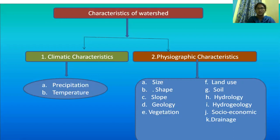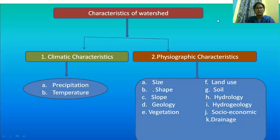In this section, we are going to discuss Physiographic Characteristics. The first one is Size — how it affects the characteristics of a watershed. The size of a watershed can be big or small. Bigger streams have larger watersheds of about millions of square miles. Watersheds are characterized as a River Basin, Macro Watershed, Sub Watershed, Milli Watershed, Micro Watershed, and Mini Watershed.